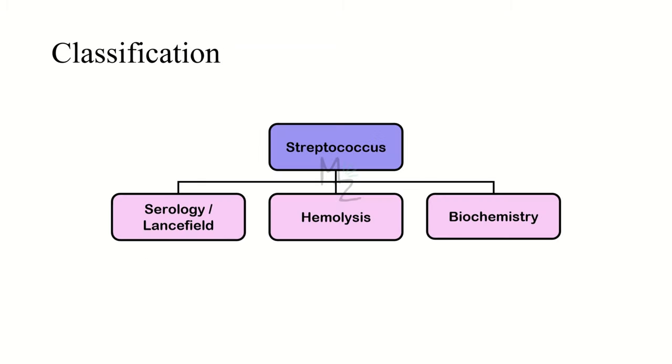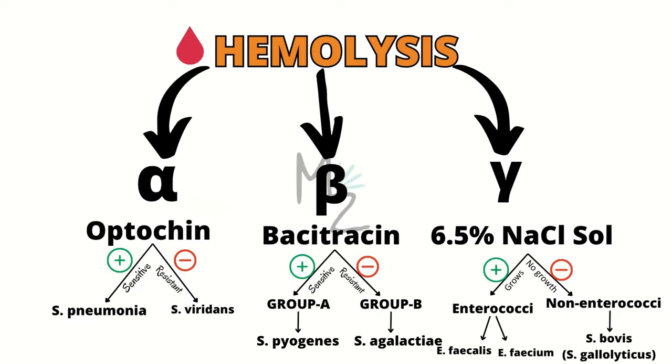Classification. Streptococcus is further classified based on serology and the Strep gallolyticus belongs to the Lancefield group D and also on the basis of hemolysis and biochemistry. On the basis of hemolysis, streps are further classified into alpha, beta, and gamma hemolytic bacteria.